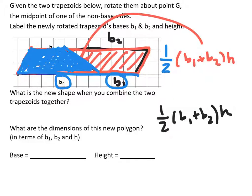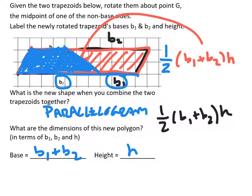So what new shape do they form together? Of course, it's a parallelogram in review here. What is the base? Well, it's B1 and B2, and its height is the original base. And the reason where the one-half comes from is that we only want half of a parallelogram's area.